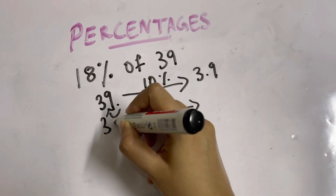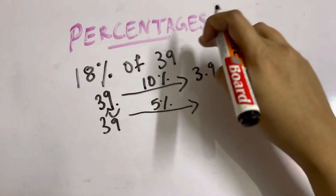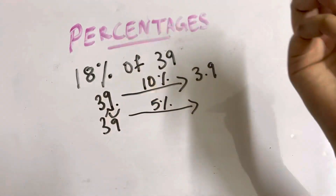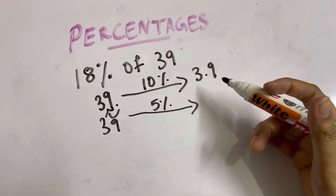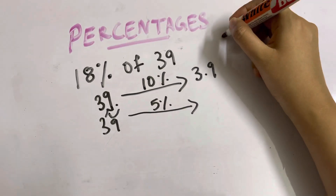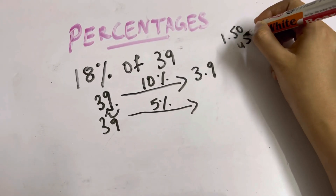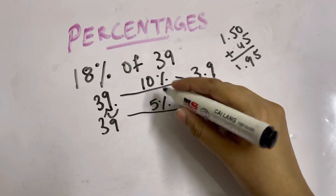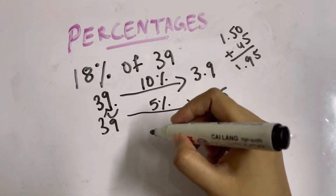5% of 39 is half of 10%, which is half of 3.9. Suppose you have a $39 bill and want to calculate an 18% tip: half of $3 is $1.50, and half of 90 cents is 45 cents, so 5% of 39 is $1.95.